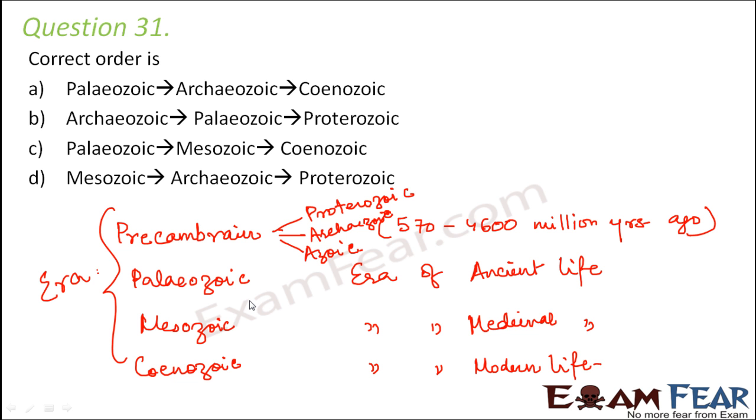So here in this case, which is the correct order? Paleozoic, Archeozoic, Cenozoic. Well, this is not the correct order because Archeozoic was before Paleozoic. Archeozoic, Paleozoic, Proterozoic. That is also not correct because Proterozoic was before Paleozoic. Paleozoic, Mesozoic, Cenozoic. Well, this is correct because Paleozoic, then Mesozoic, then Cenozoic. So option C is right.